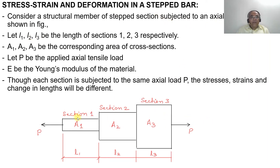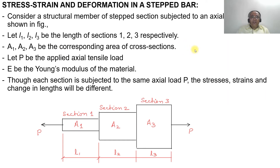Let L1, L2, L3 be the lengths of sections 1, 2, and 3 respectively. Let A1, A2, and A3 be the corresponding cross-sectional areas, and let P be the applied axial load. Let E be the modulus of elasticity of the material, since the material is the same for all cross sections.